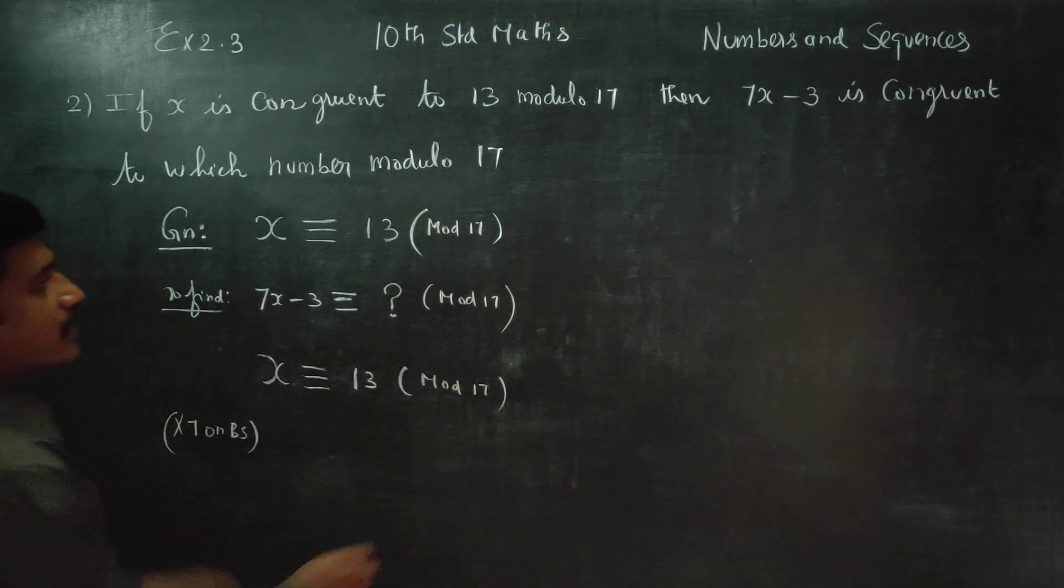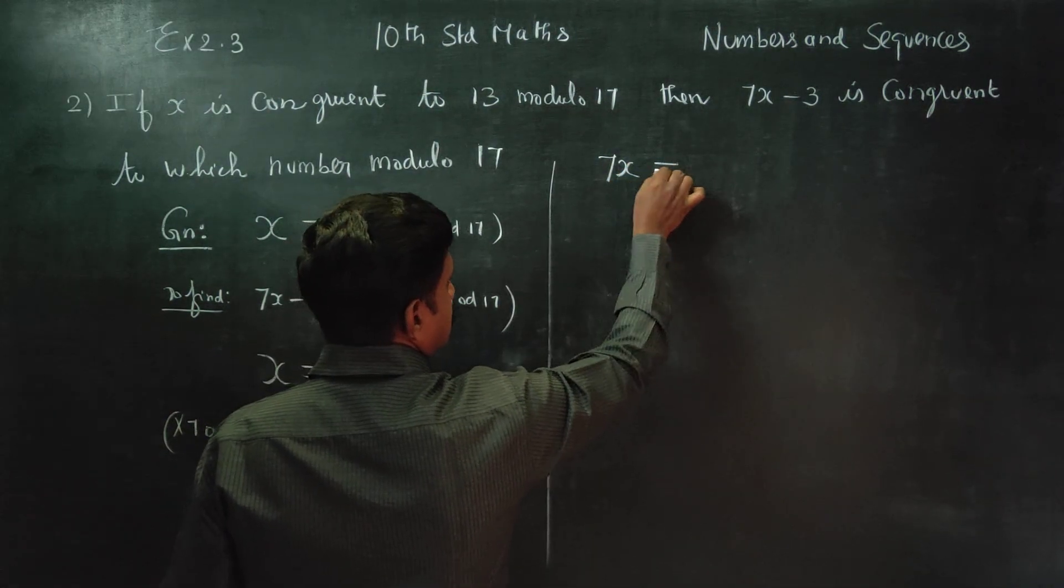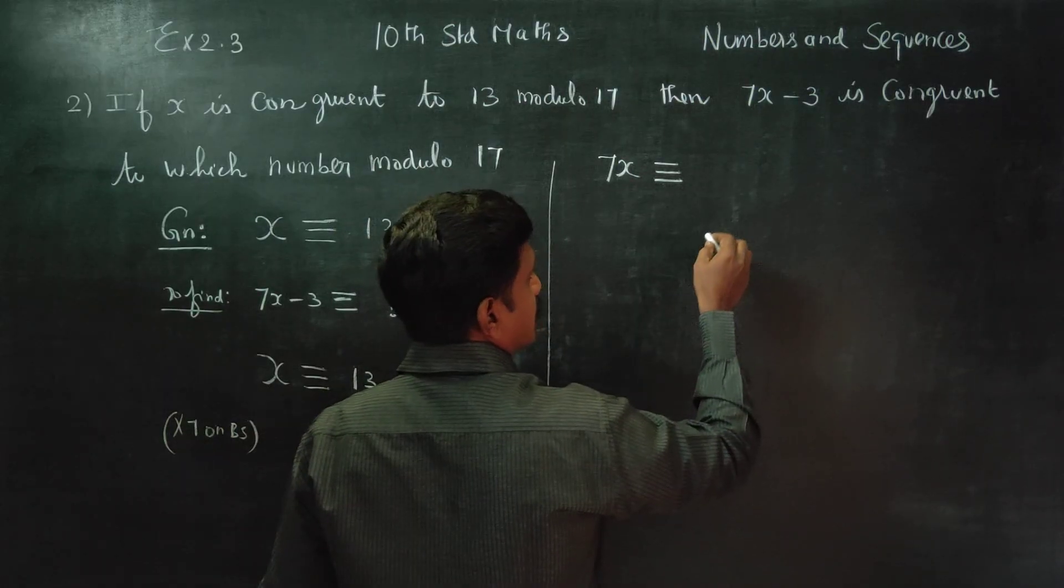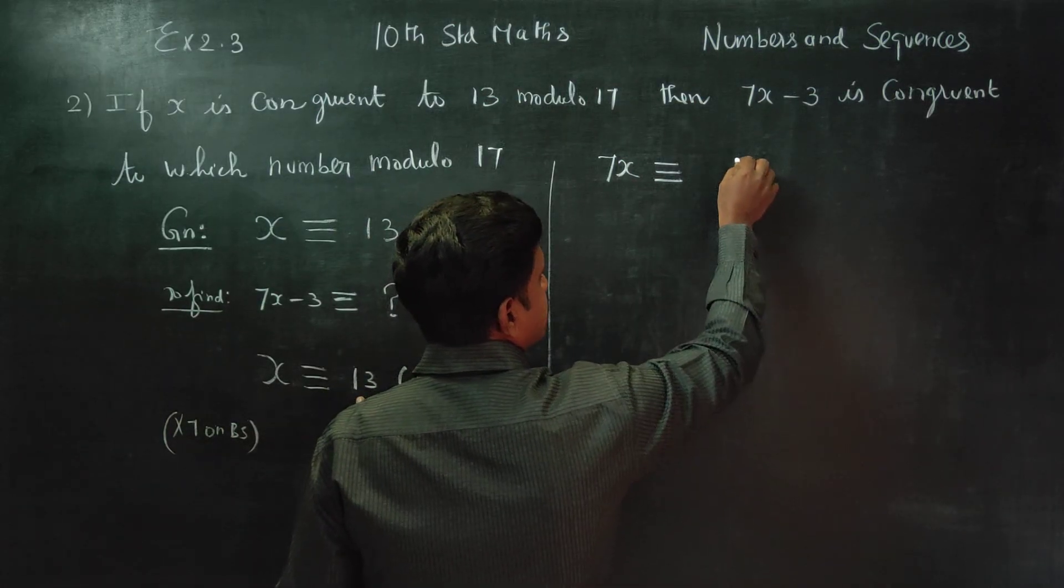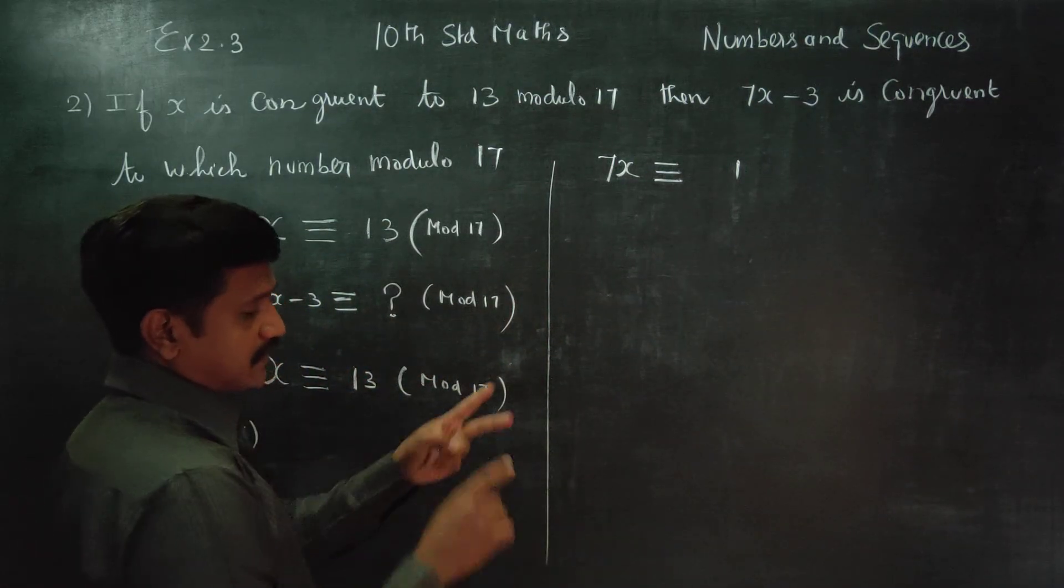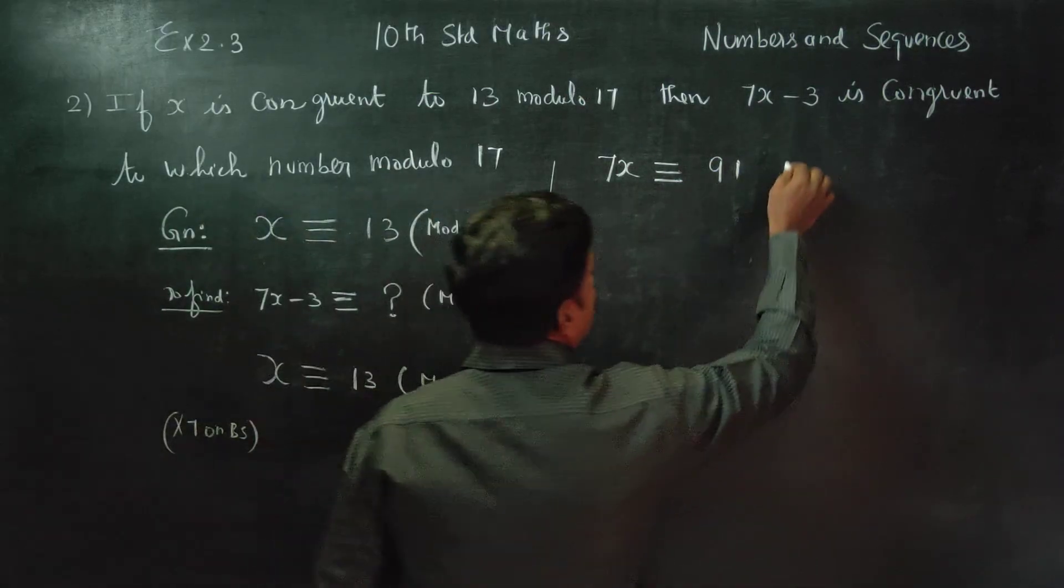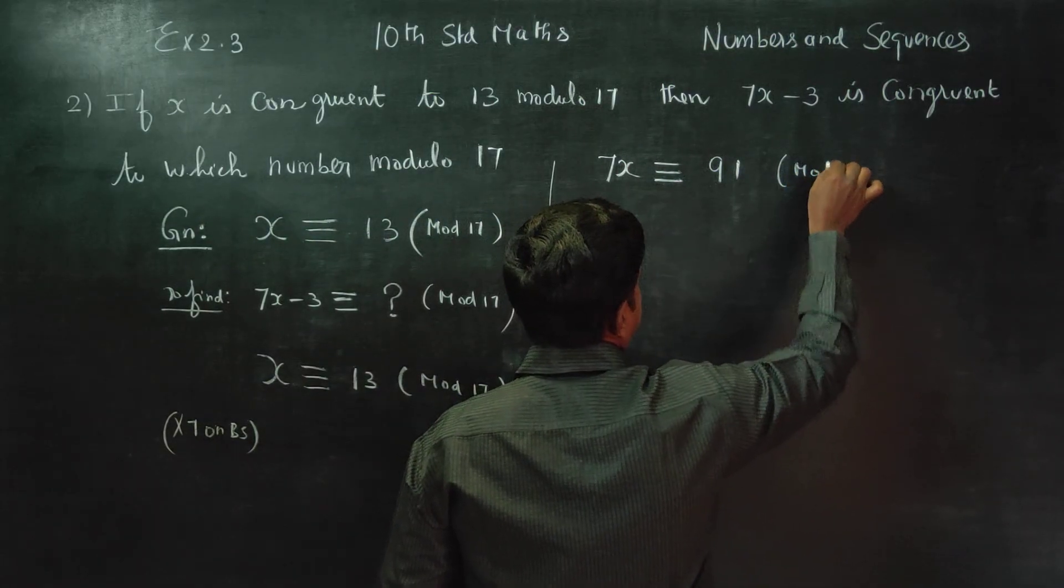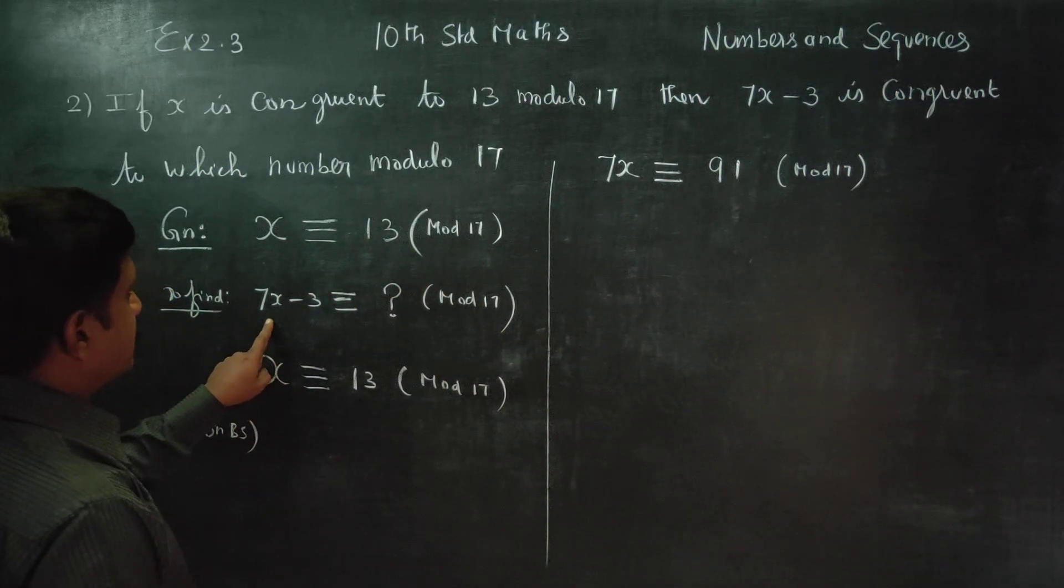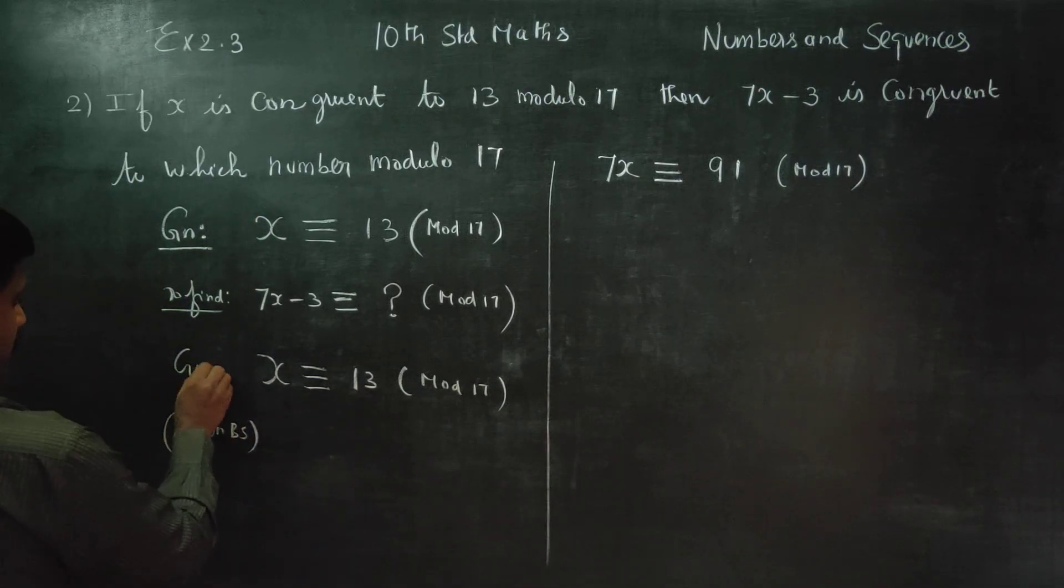Both sides. 7x are congruent to 13 times 7. 7x are congruent to 91.